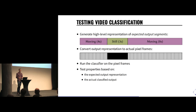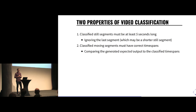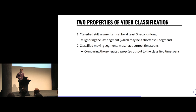I generate a stream of frames with pixels. Moving segments are alternating frames between gray and white — just flipping back and forth — and still segments are all black. This will trigger the correct behavior in the classifier. It's not very realistic, but it works well. Then I run the classifier on those pixel frames, and with the result I can write properties and compare the expected output to the actual output. I have two properties: one is that classified still segments must be at least s seconds long; the other is that classified moving segments should have the correct timestamps.